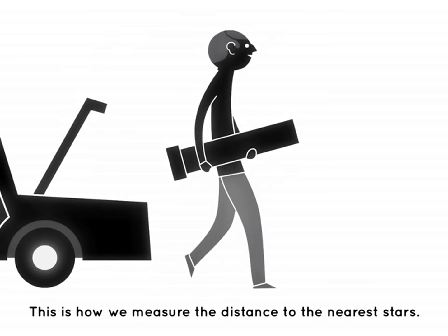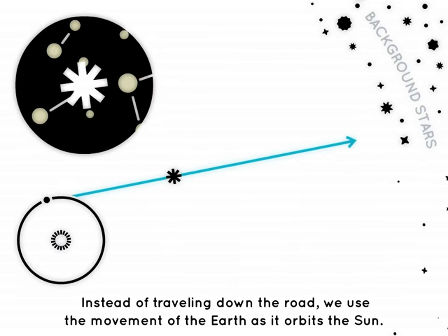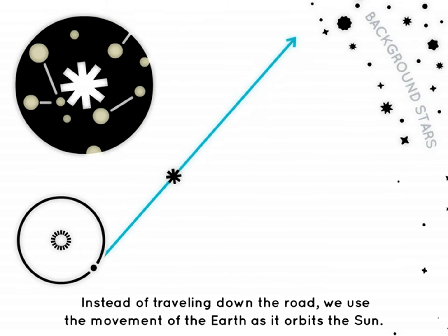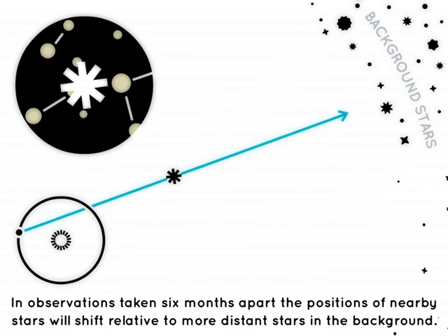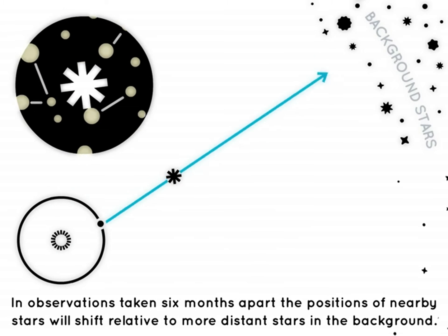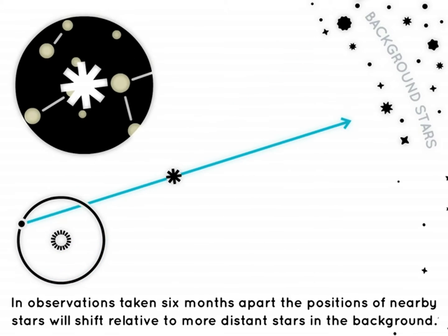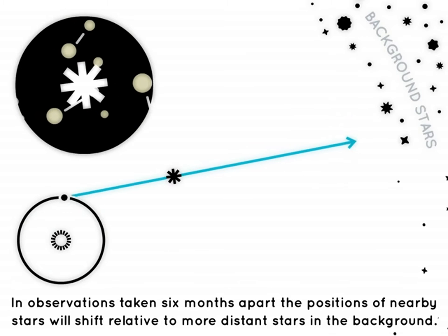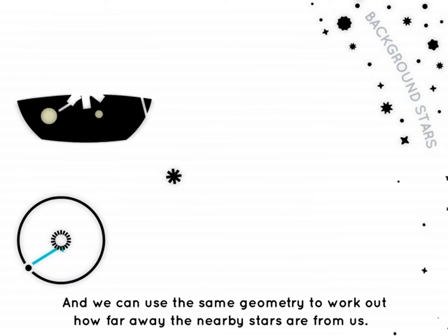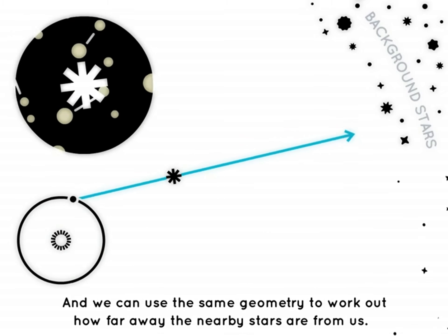This is how we measure the distance to the nearest stars. Instead of travelling down the road, we use the movement of the Earth as it orbits the sun. In observations taken six months apart, the positions of nearby stars will shift relative to more distant stars in the background, and we can use the same geometry to work out how far away the nearby stars are from us.